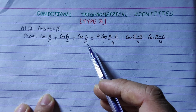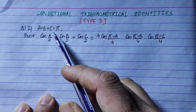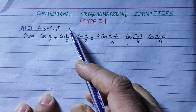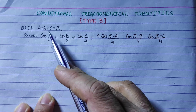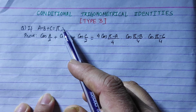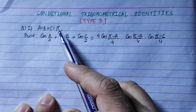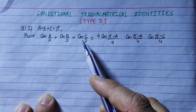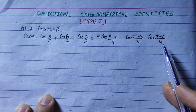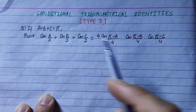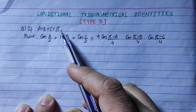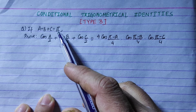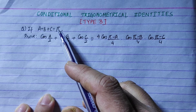Normally, the condition a plus b equals pi minus c will be used. We will divide by 2 and then by 4, so the condition becomes a plus b upon 4 equals pi minus c upon 4.